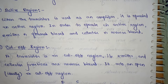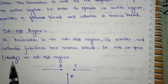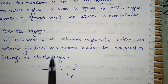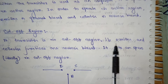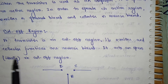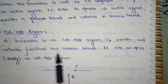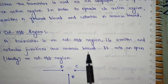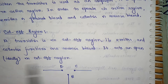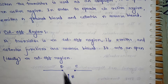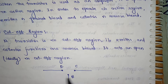Next, the cutoff region. A transistor is in the cutoff region if both the emitter and collector junctions are reverse biased. It acts as an open circuit in the cutoff region.